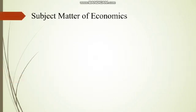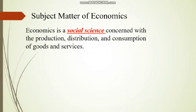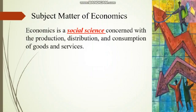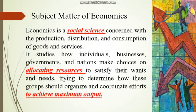Now, the subject matter of economics: by studying these definitions, we can conclude that economics is a social science concerned with the production, distribution, and consumption of goods and services. It studies how individuals, businesses, governments, and nations make choices on allocating resources to satisfy their wants and needs, trying to determine how these groups should organize and coordinate efforts to achieve maximum output.